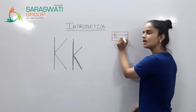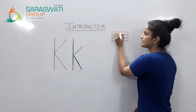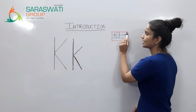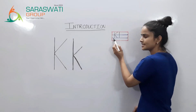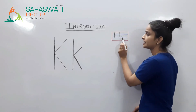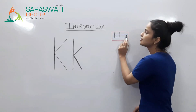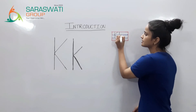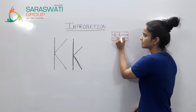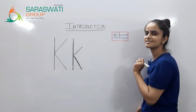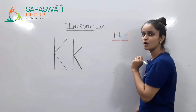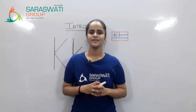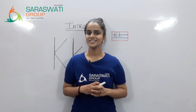Now, we will do the lowercase k. Standing line — it starts from the top line and goes to the second base line. But the slant lines come inside between the first base line and second base line. So, kids, this is the formation of lowercase k.